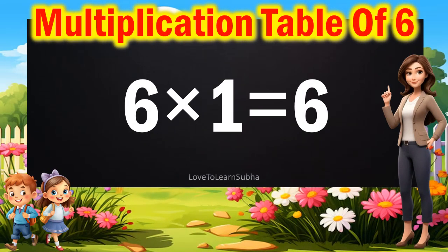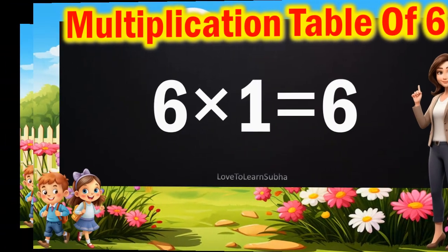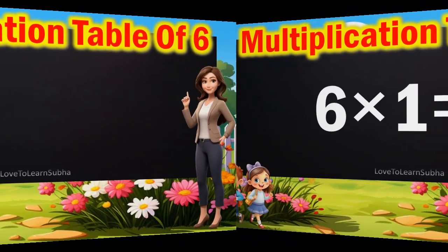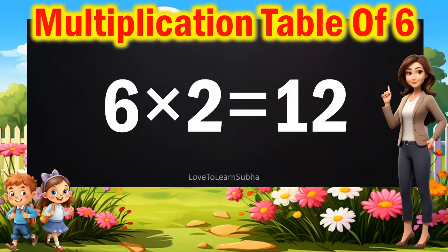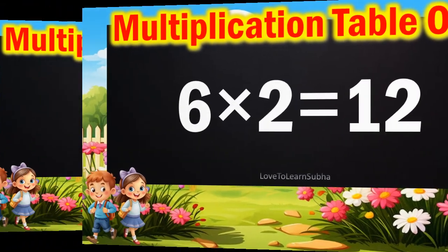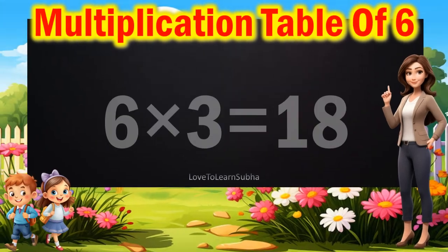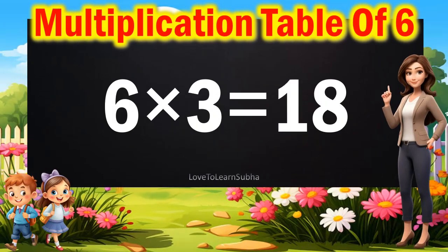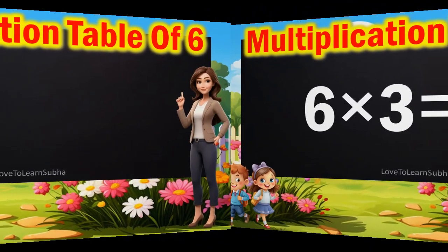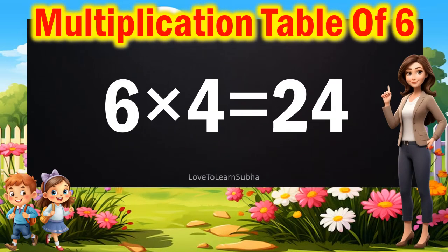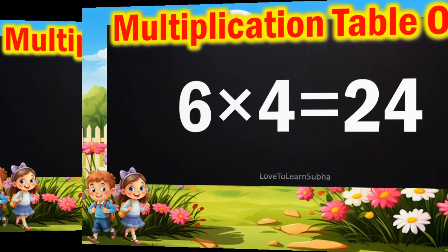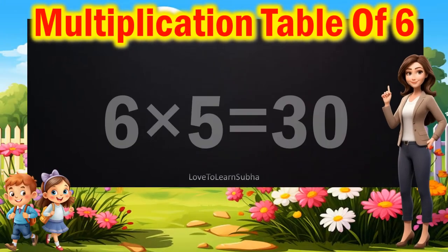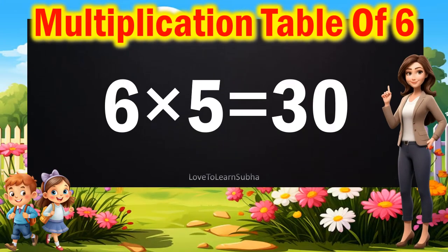6 ones are 6. 6 twos are 12. 6 threes are 18. 6 fours are 24. 6 fives are 30.